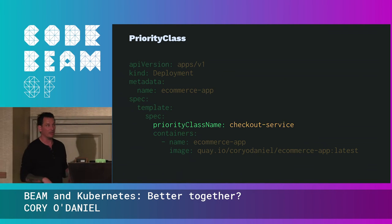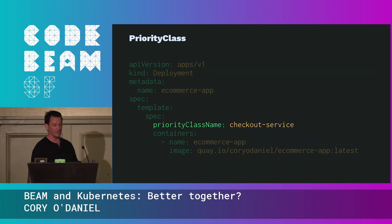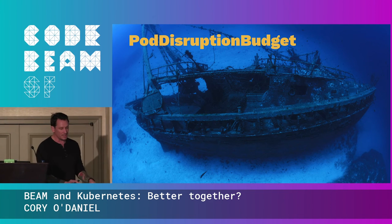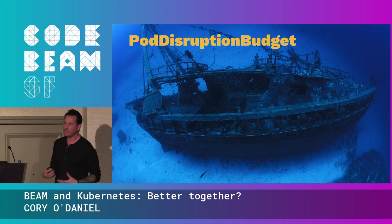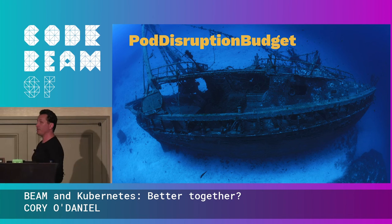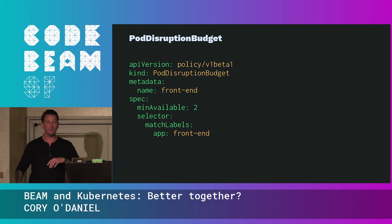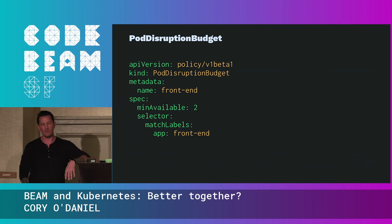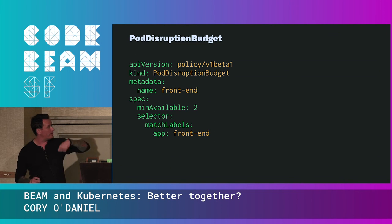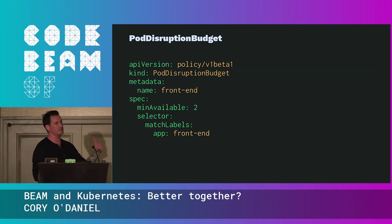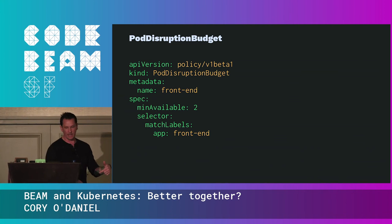The answer is pod disruption budgets. These let us say how many concurrent interruptions our application can deal with. We can say checkout should always be running and never be shut down, but also the front end — we need at least two of those so we can get people into the sales funnel so they can get to checkout.